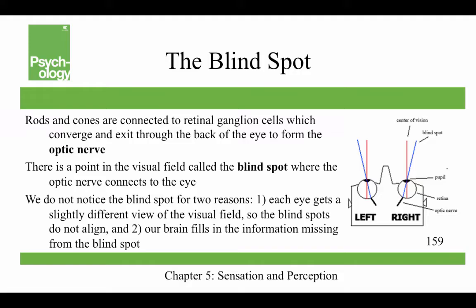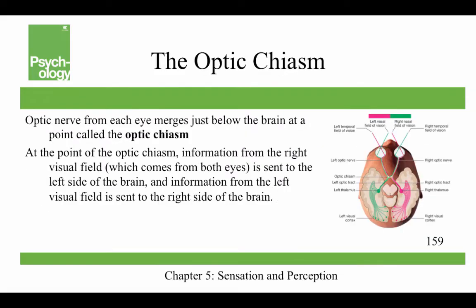The rods and cones are connected to retinal ganglion cells, which converge and exit through the back of the eye to form the optic nerve, carrying visual information from the retina to the brain. There's a blind spot in the visual field where the optic nerve connects to the eye. We don't notice this for two reasons: each eye gets a slightly different view so the blind spots don't align perfectly, and our brain fills in the missing information from the other eye. The optic nerve from each eye merges below the brain at the optic chiasm, where information from the right visual field is sent to the left side of the brain, and information from the left visual field is sent to the right side of the brain.